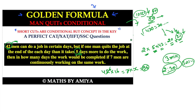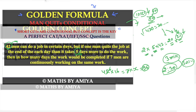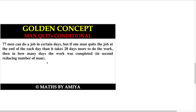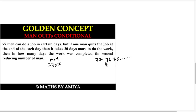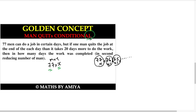Now I'll explain the concept behind the formula — what happens if the question is twisted. In this question, 77 men take x days to complete the work, so total work = man × time = 77x. In the second case, we start with 77 men, then one leaves each day: 76, 75, and so on. The total work done is the sum of this reducing series, which forms an AP.